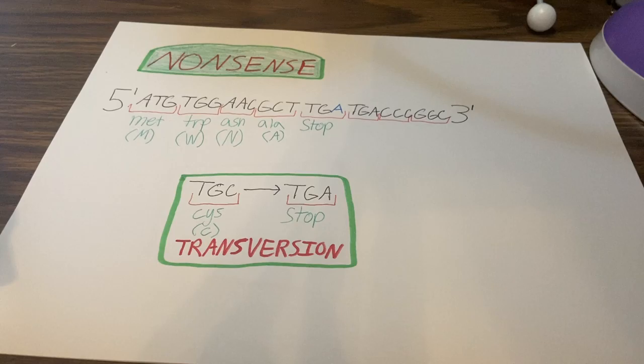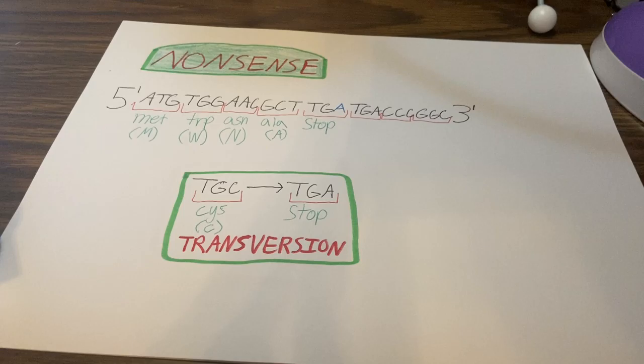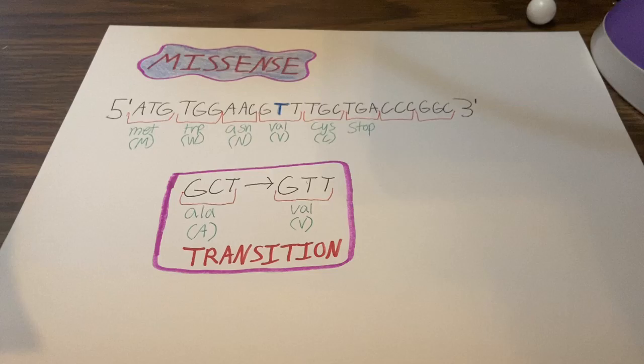The third mutation we're looking at is the nonsense mutation. This is where the codon is changed to become a stop codon. So the base cytosine goes through a transversion into the base adenine that creates a stop codon.